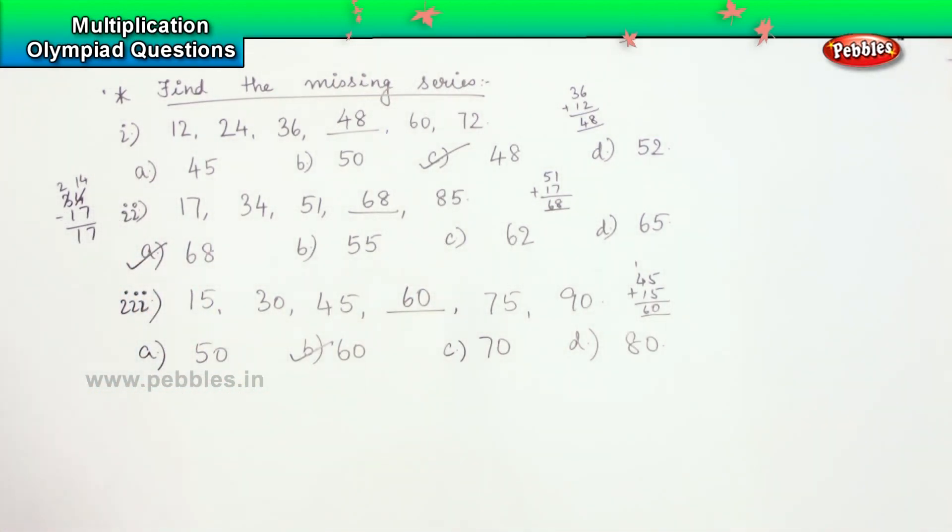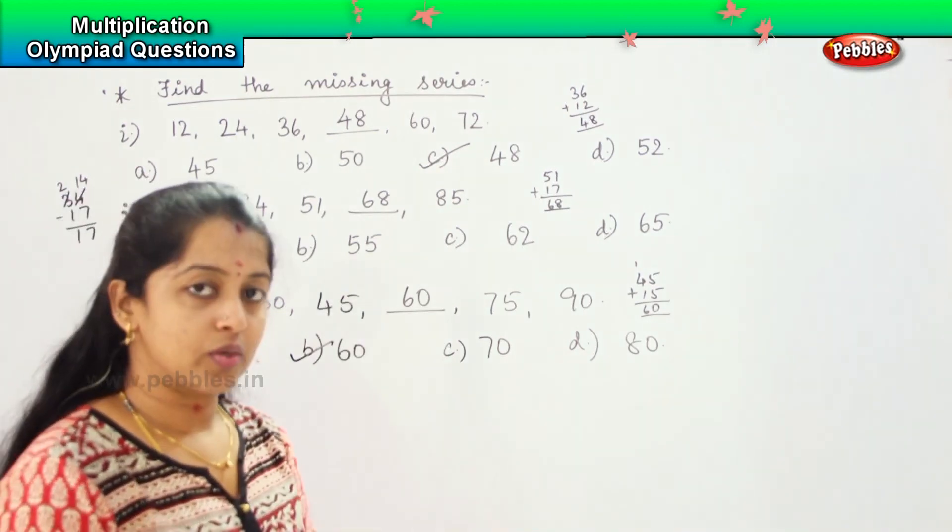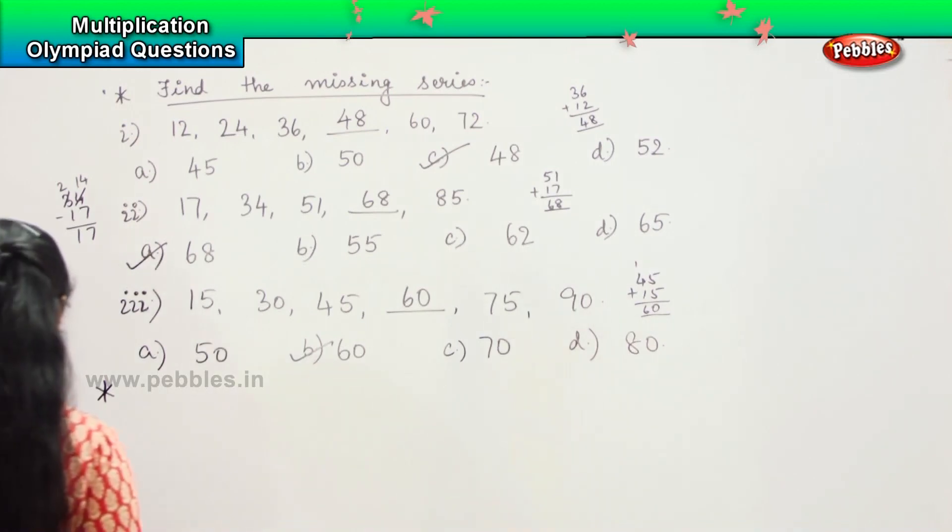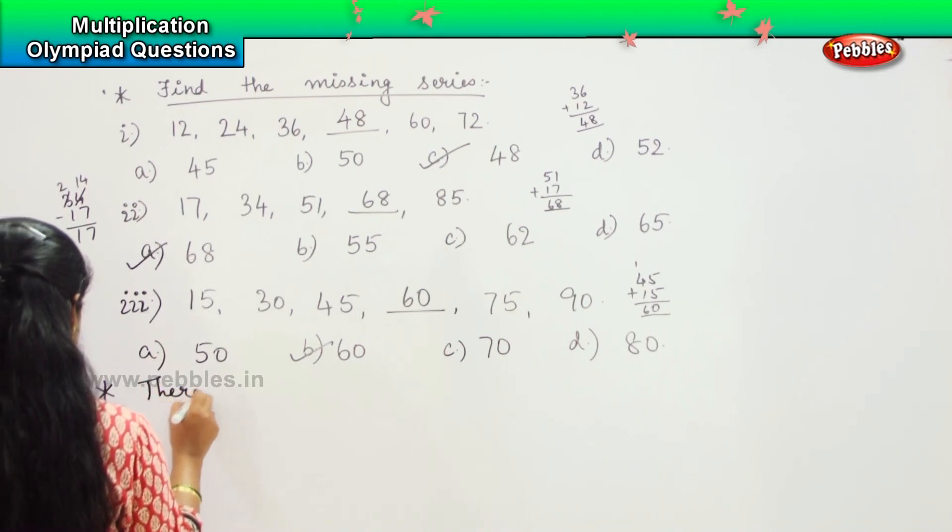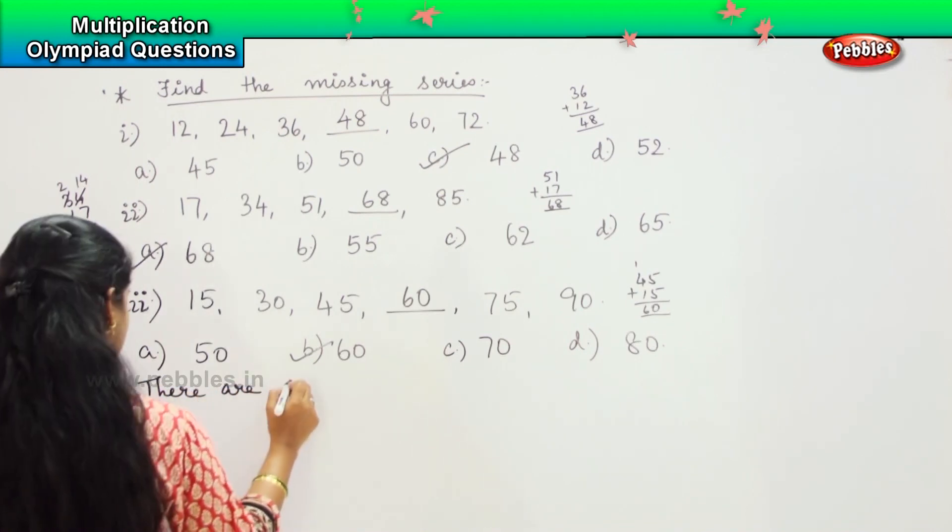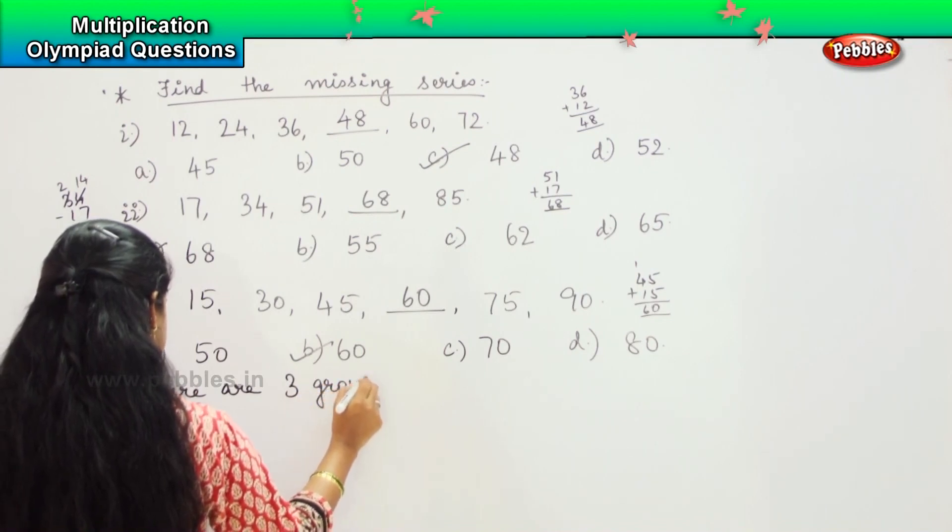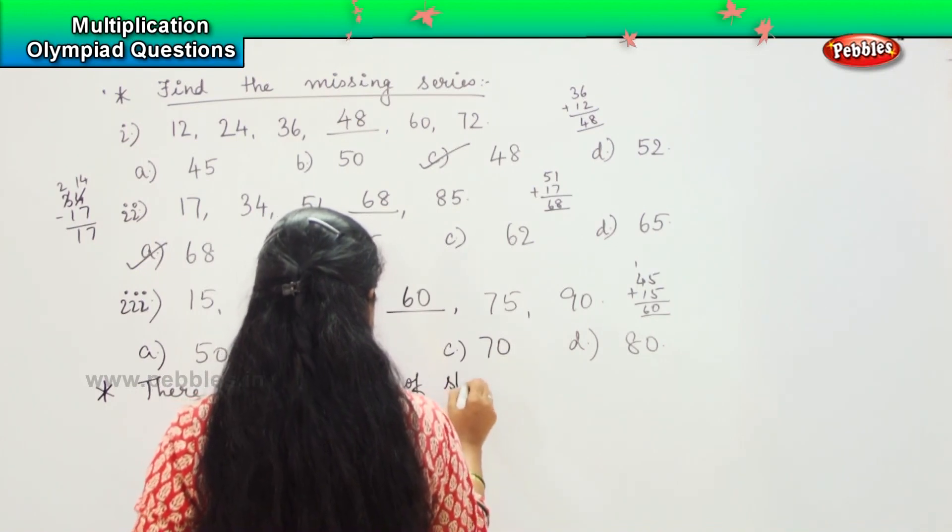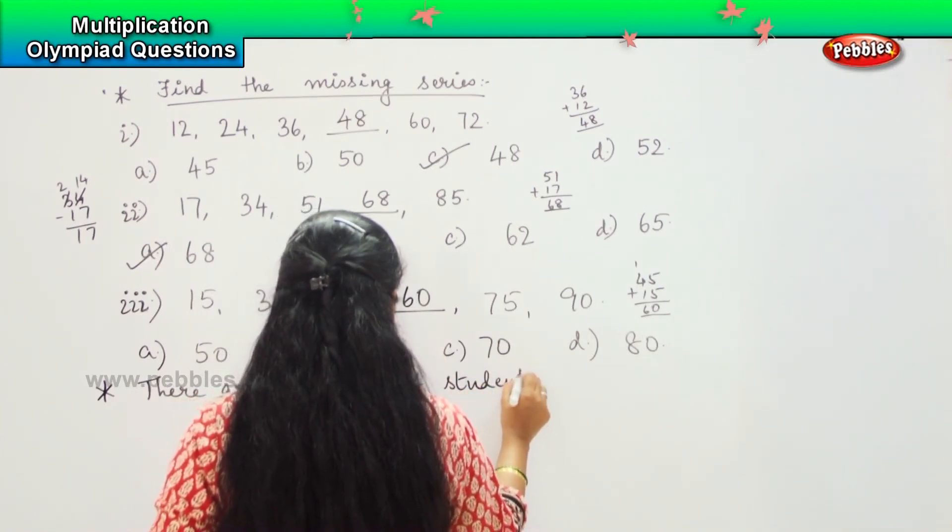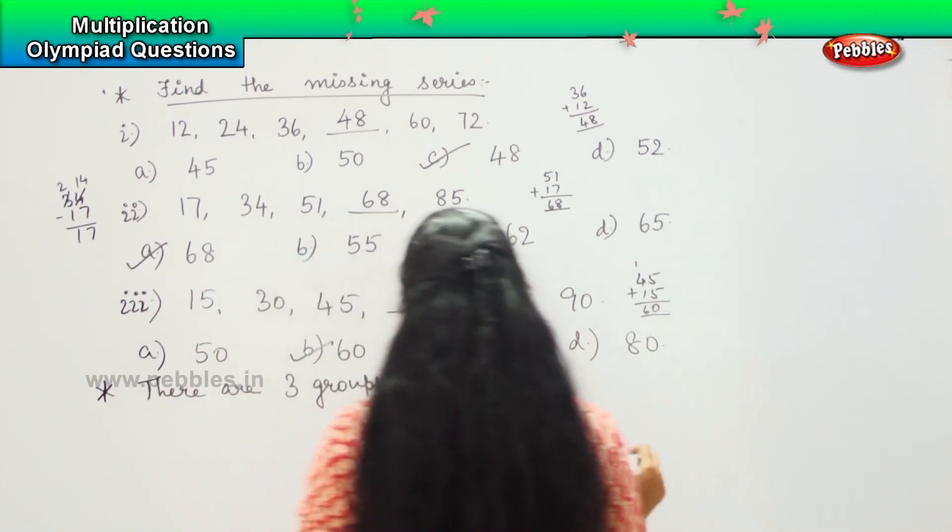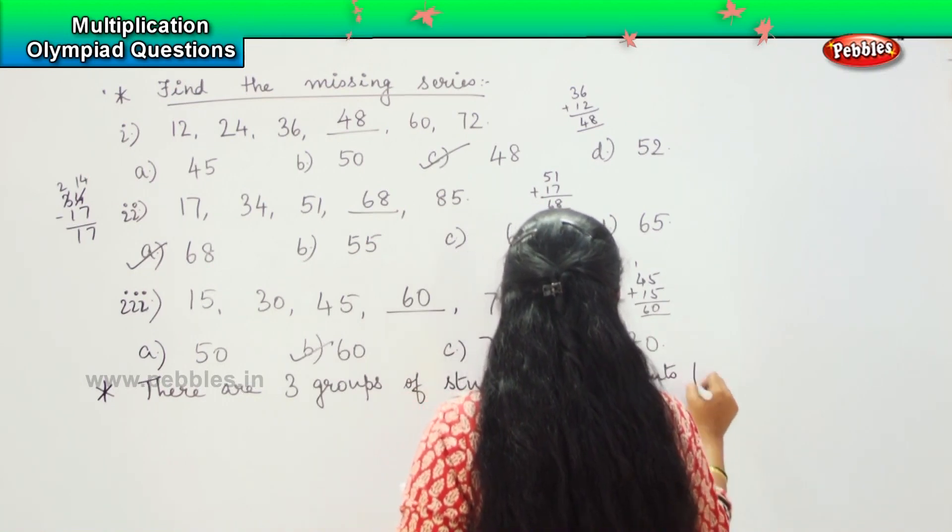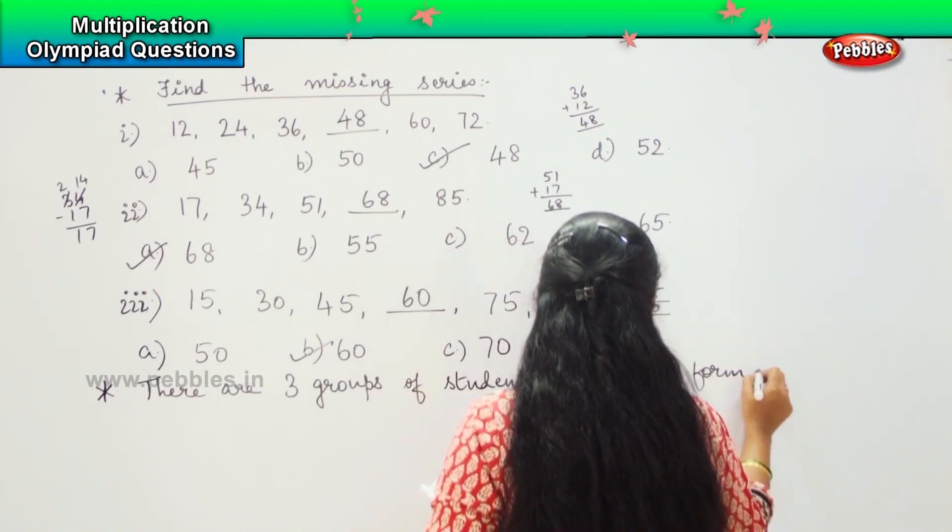Clear? Shall we proceed further? So here is my next question. My next question is there are 3 groups of students. 7 students form each group.